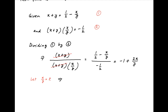Now let x upon y be equal to z. Therefore, the above equation becomes 1 upon z is equal to minus 1 plus 2z, which can be written as 2z squared minus z minus 1 is equal to 0.